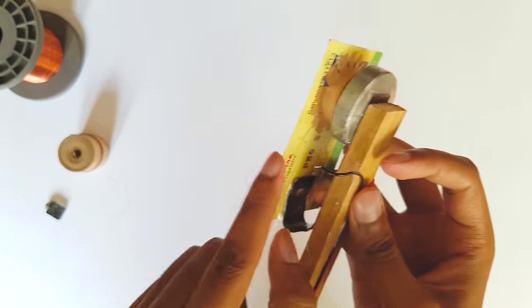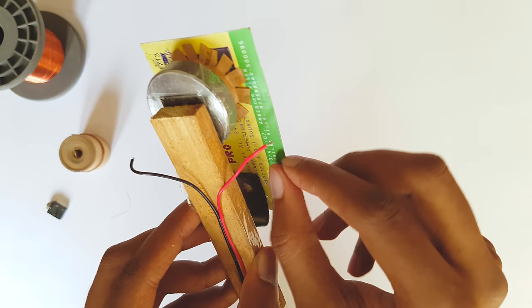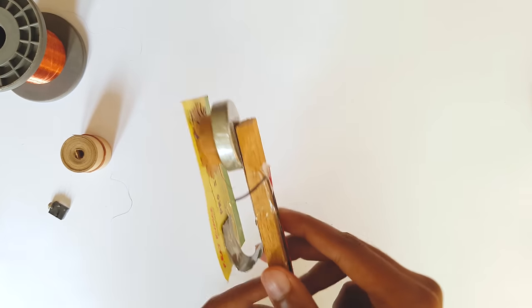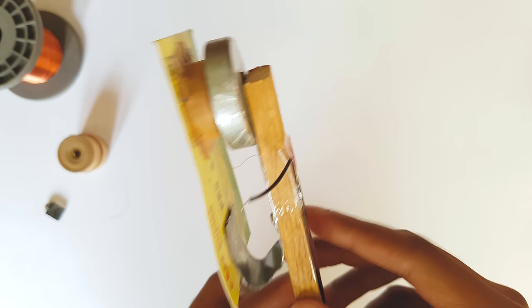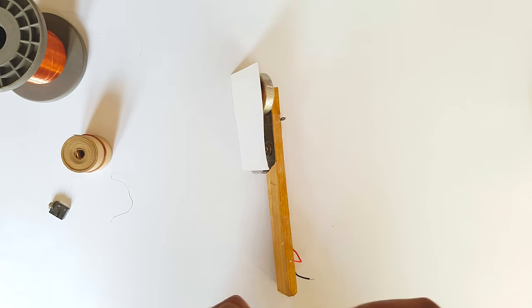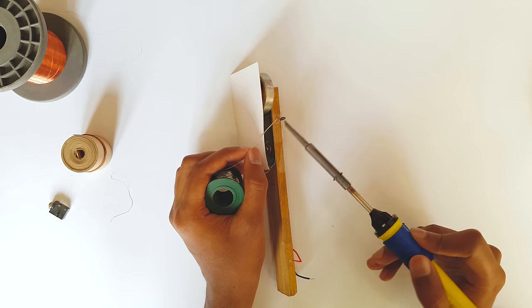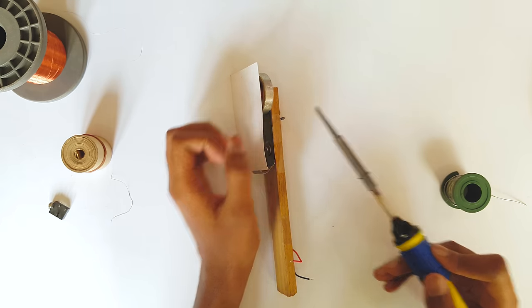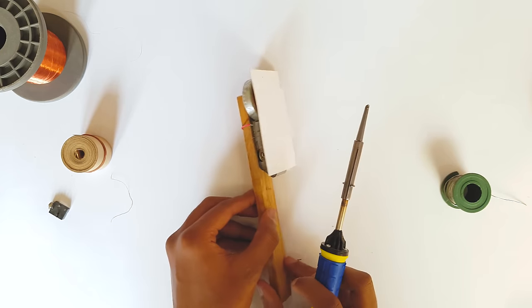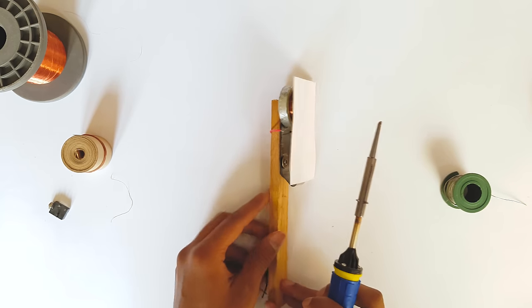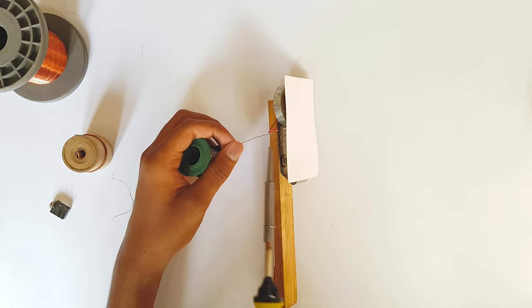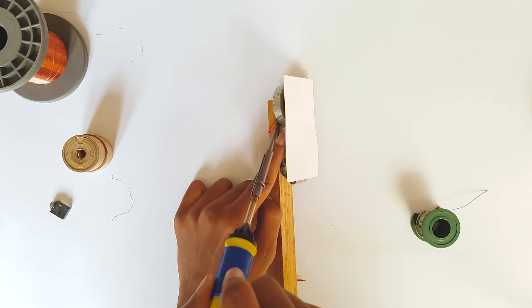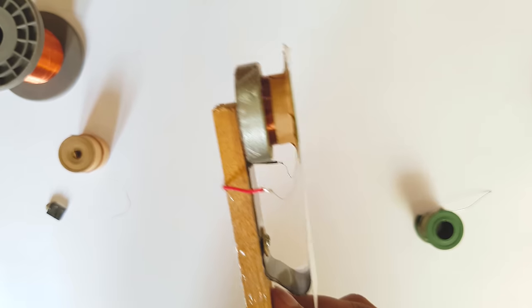Now bend the wire in this way so that you can solder these wires to the leads of the voice coil easily. Now solder the ends of the wires to the voice coil. Solder the black wire to one end of the voice coil. Now solder the red wire to the other end of the voice coil.